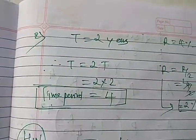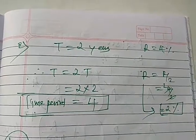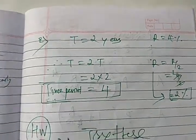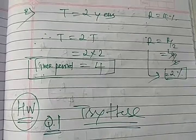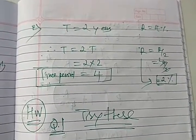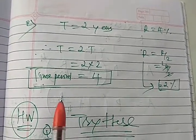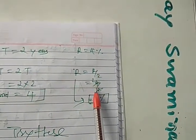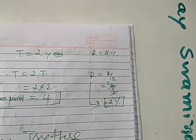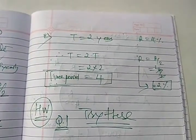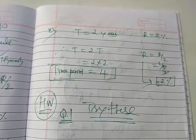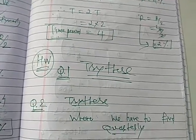Second sum here, T equal to 2 years given, R equal to 4 percentage. So as per our that half yearly formula, T equal to 2T. So 2 into 2, that is 2 into 2 means 4. So time period is equal to 4. And here R equal to R upon 2, here 2%. So question number 1 it is a try this, it is homework, do from home.